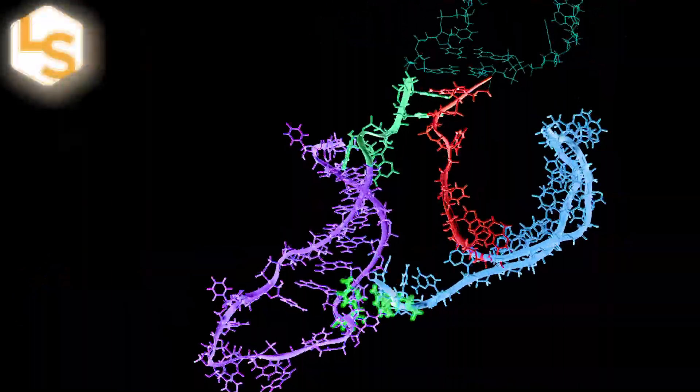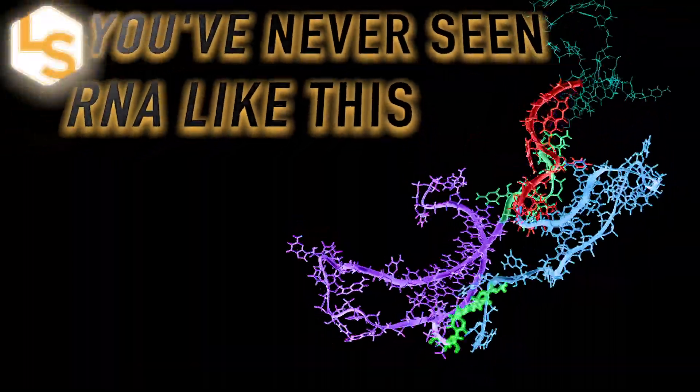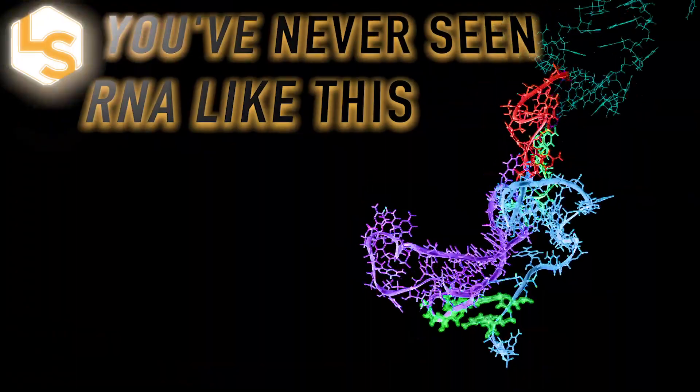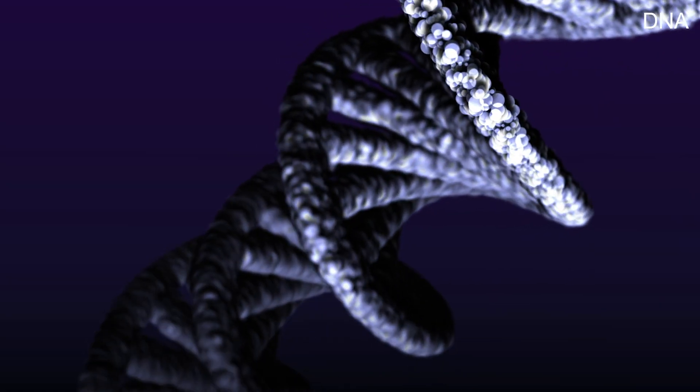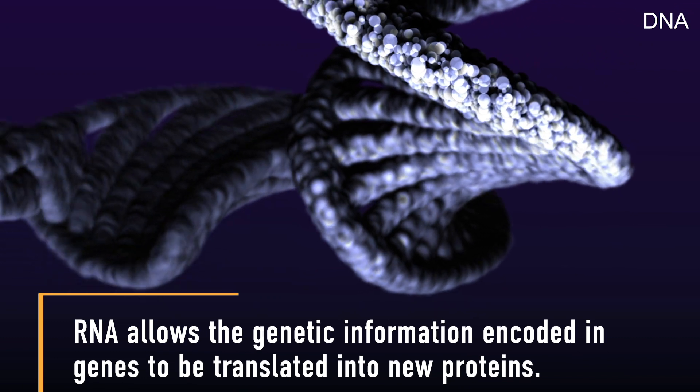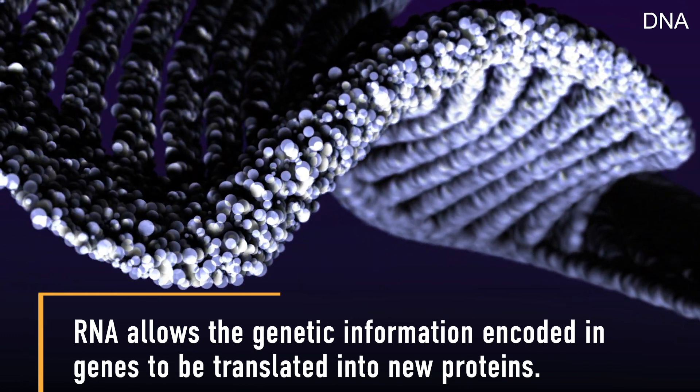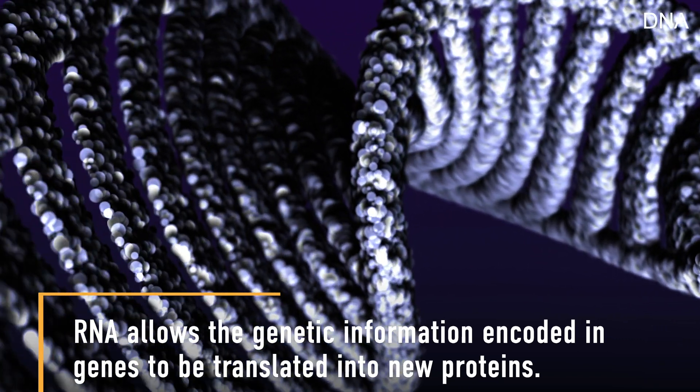This dancing, twisting conga line of molecules is called RNA. RNA is a molecular cousin of DNA that allows the genetic information encoded in genes to be translated into new proteins.